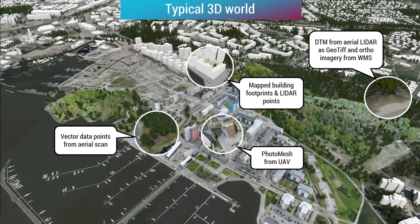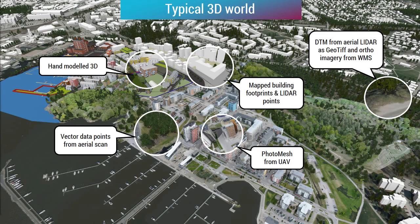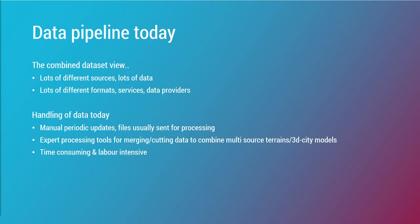Maybe there's a local photo mesh created from a UAV or drone, processed with Agisoft or ContextCapture or something like that, and that's also fitted into the unified view and visualization. Finally the hand-modeled 3D to represent maybe an urban plan, some development, or landmarks you want to highlight with a higher level of detail. So that's a lot of data — lots of sources, lots of formats, lots of tools involved in creating these unified views, and lots of data providers as well.